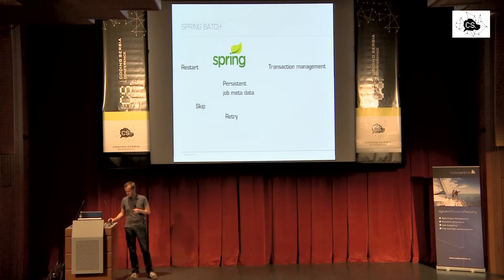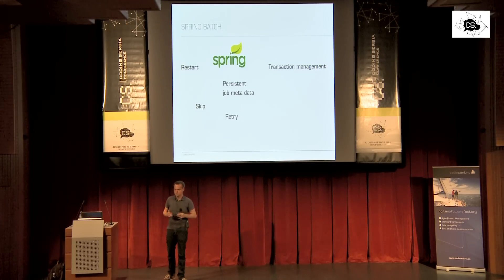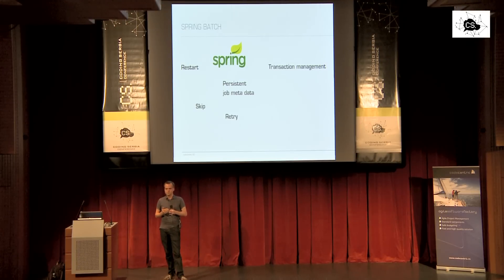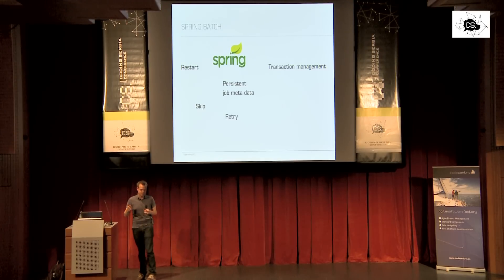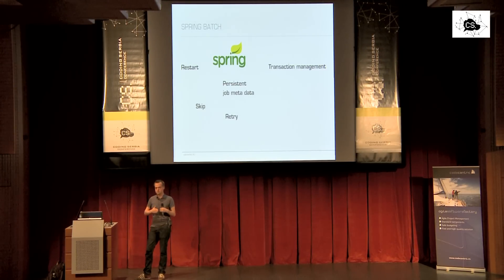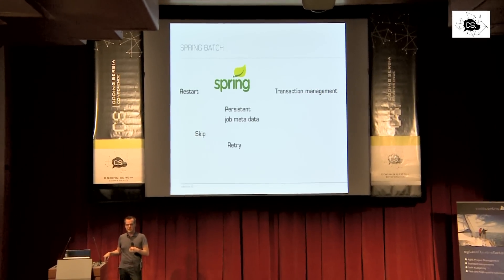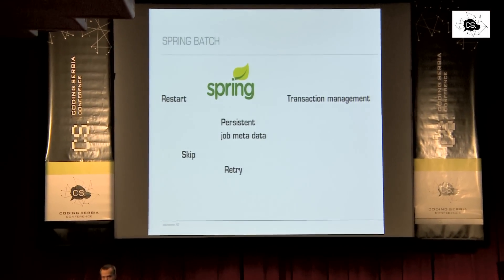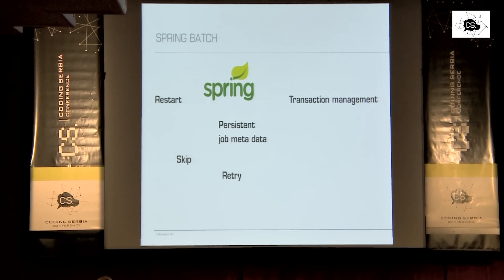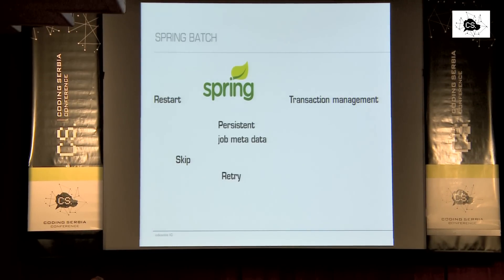With persistent metadata comes the restart possibility. If you have a failed batch job — maybe some record caused an error — and you want to restart the batch, you don't want to process all the data again that was processed before. You want to restart at the record that was the last one successfully processed. SpringBatch provides possibilities to do this, and of course you need persistent metadata for it — if you don't have that, you cannot do a restart because the data is gone.